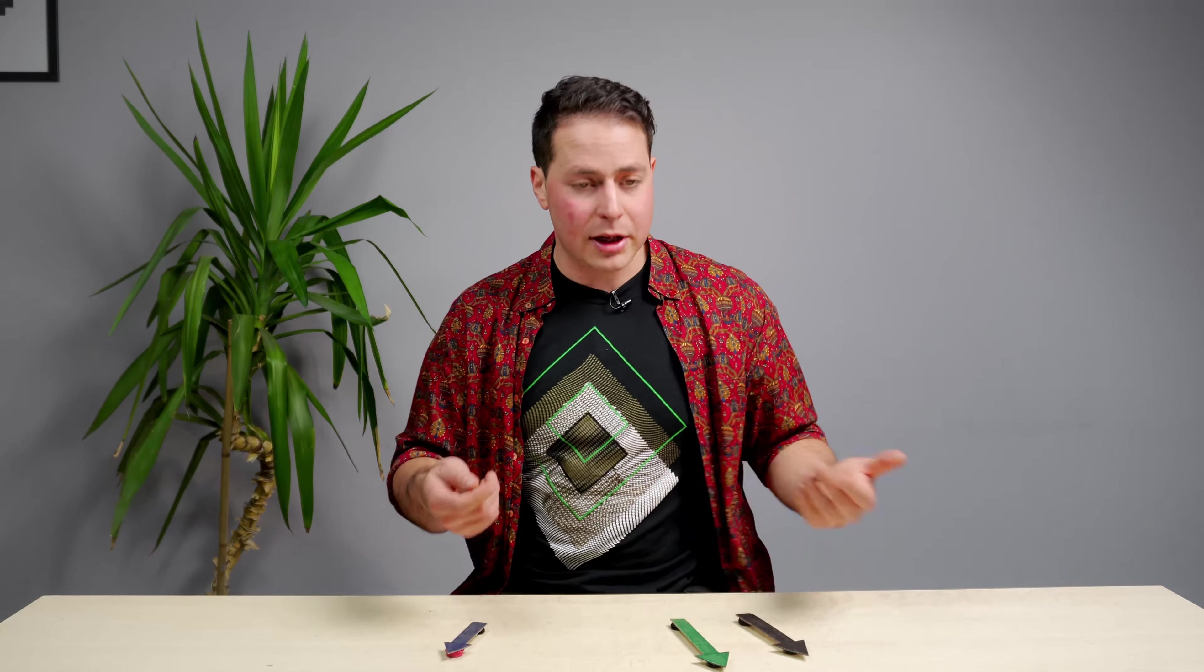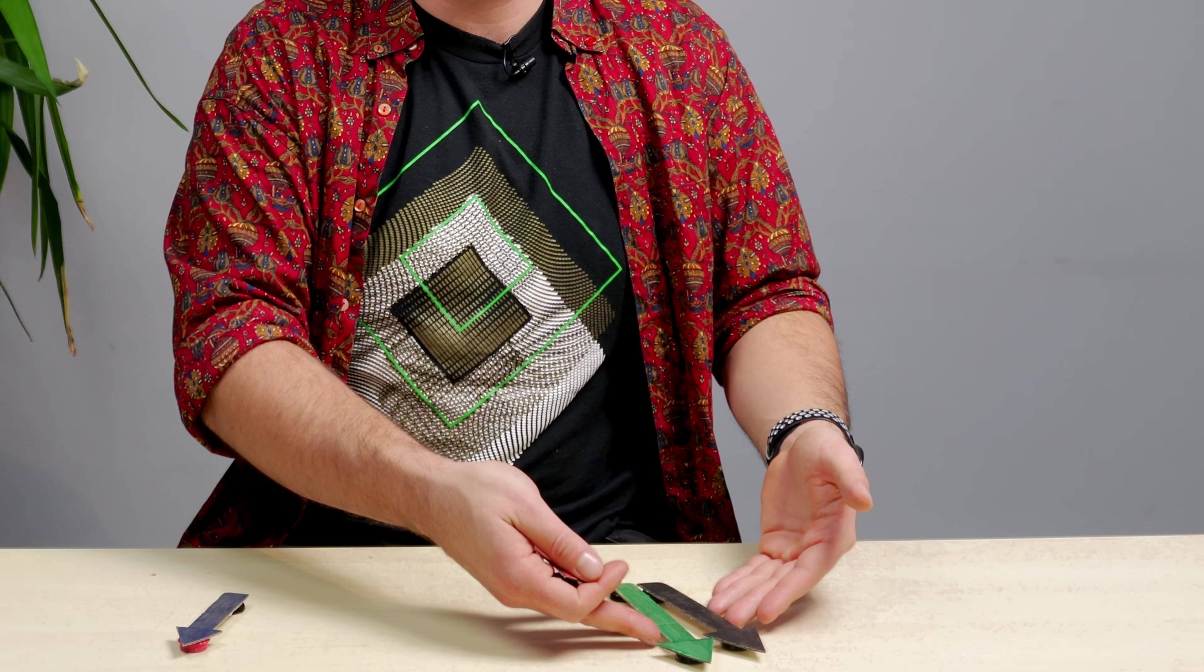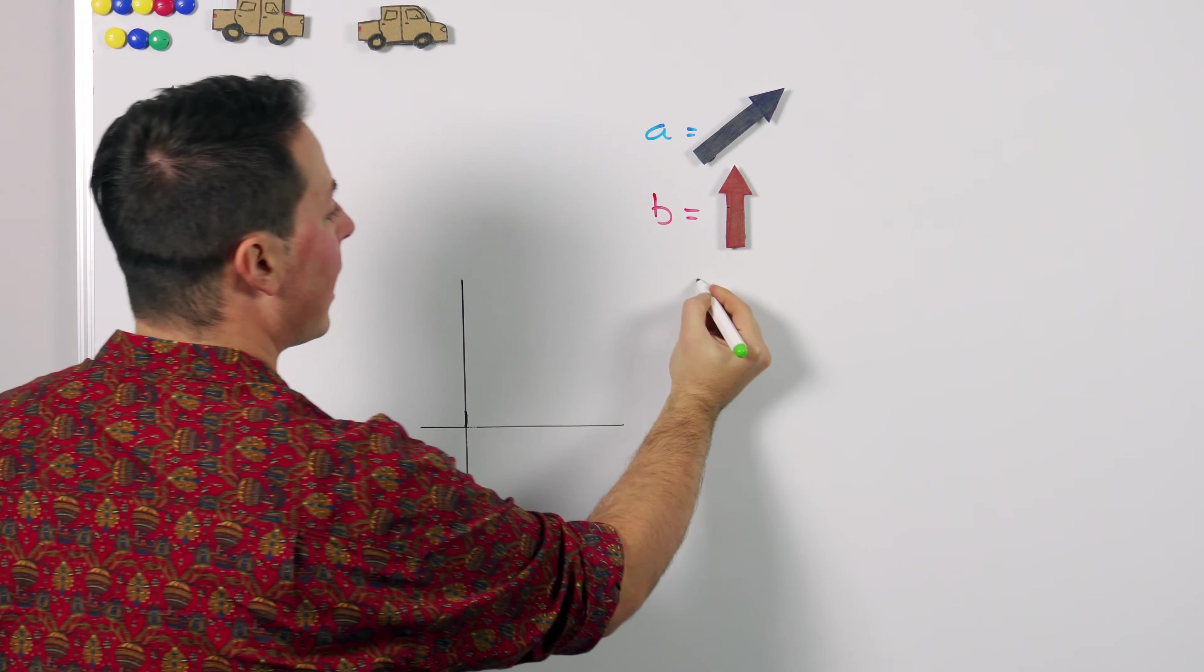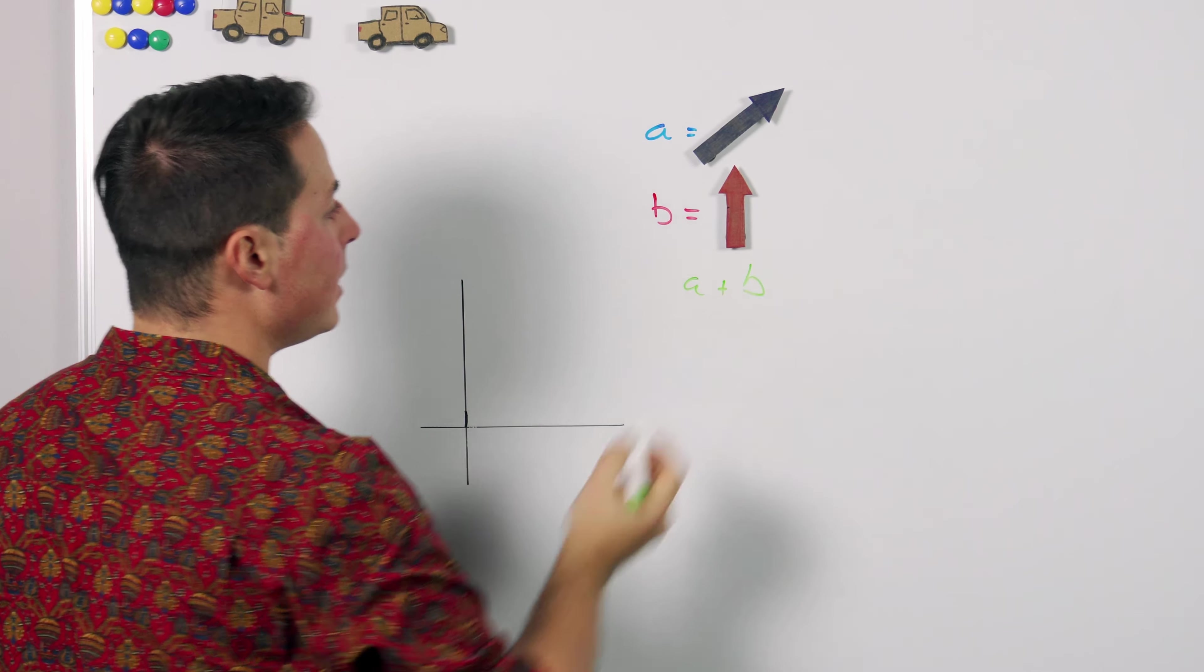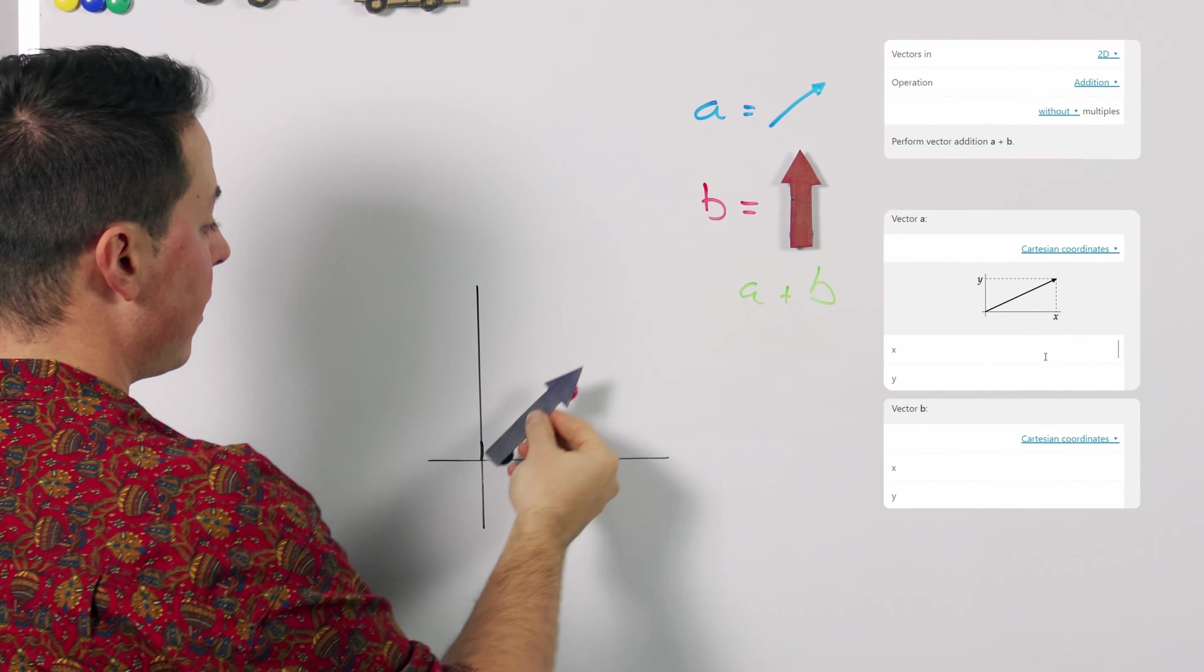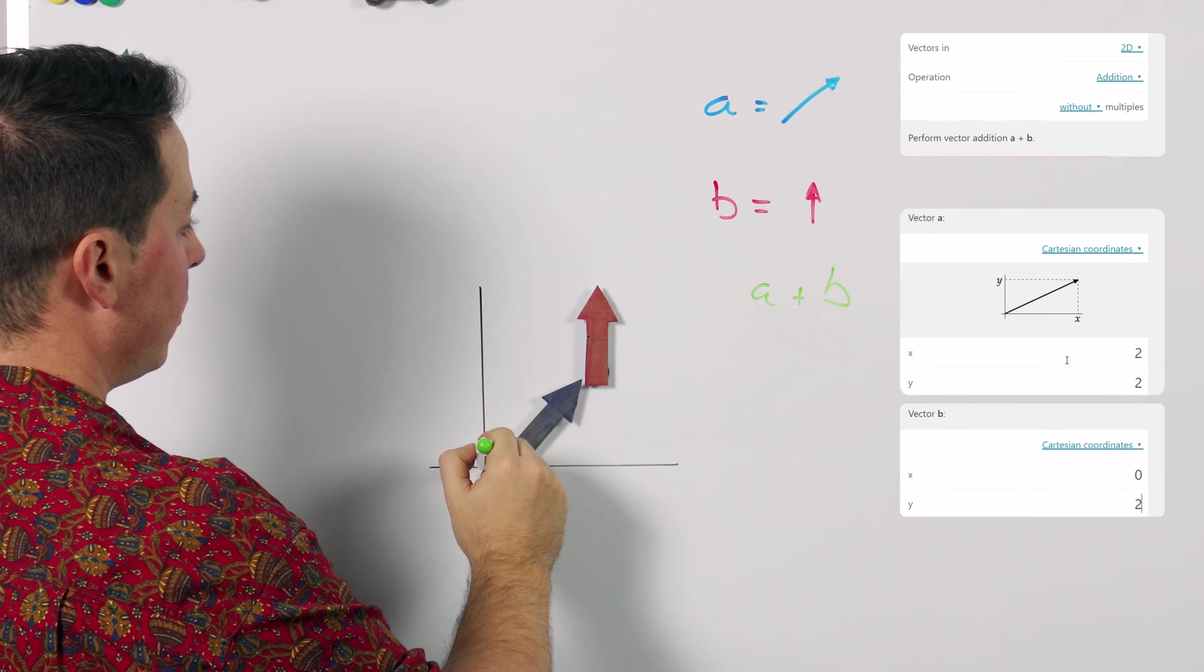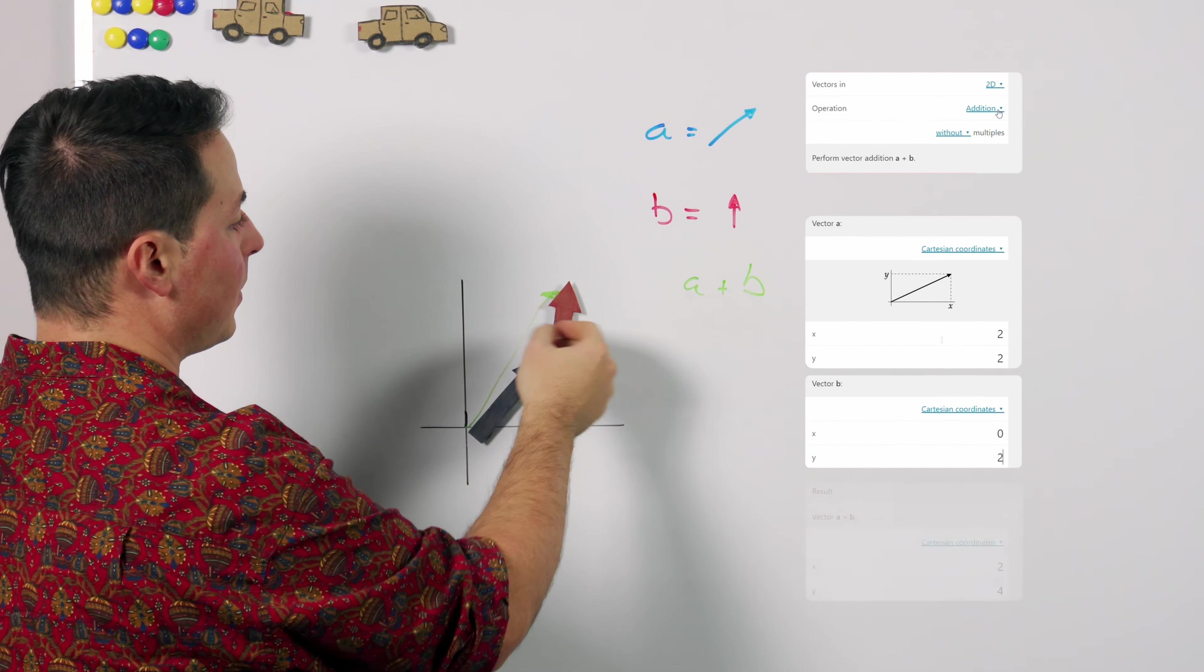So vector subtraction is just vector addition with extra steps. For example if we want to add a plus b we simply chain them together like we've seen before and the result would be the sum of a plus b.